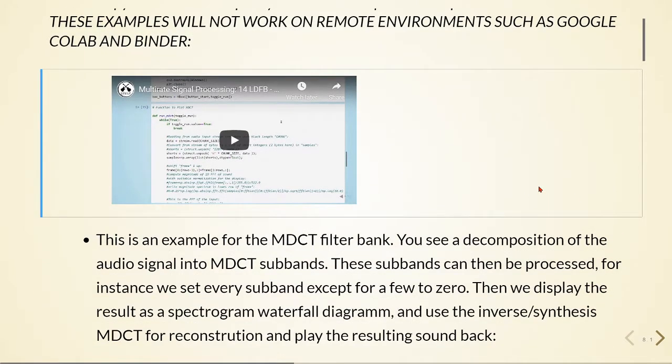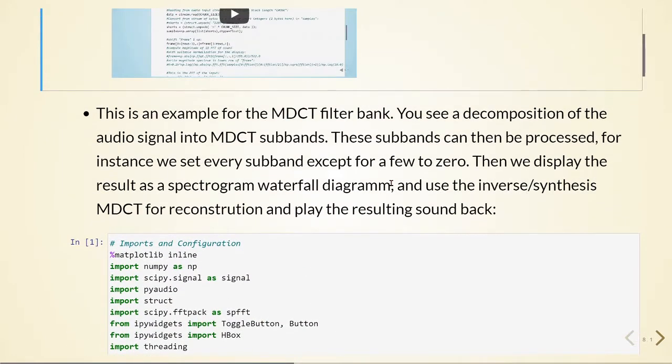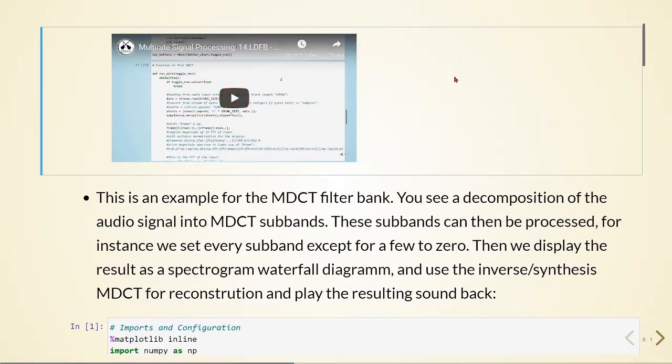The first example is an example we've already seen and it's also explained in the multi-rate signal processing subject, so I'll leave the video here and we have the code here, but I will not go into detail again. You can watch this video here, but we will go into the details of a fast implementation of the MDCT filter bank.